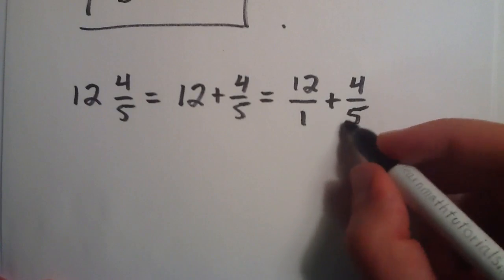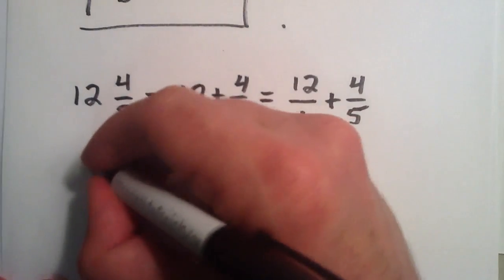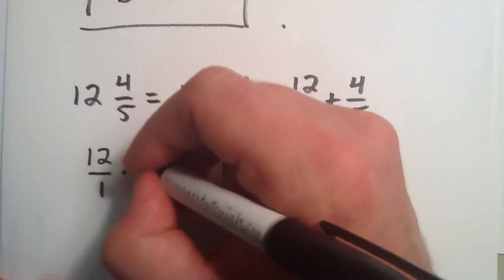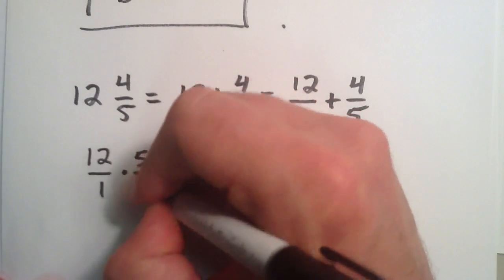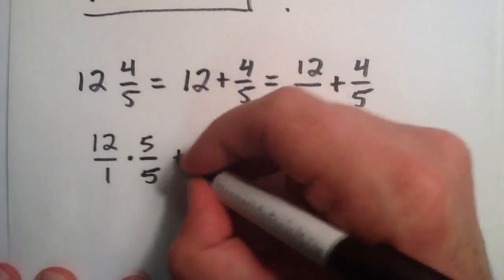This time, the common denominator that we want is 5. So we multiply this by our disguised number 1, which is simply 5 over 5, so that we get that common denominator. And we add the second term, the 4 fifths.